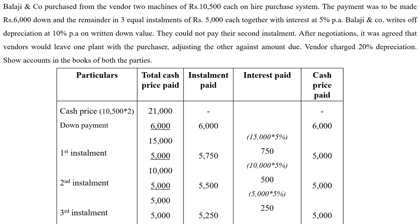The question: Balaji and Co. purchased from the vendor two machines of rupees 10,500 each on hire purchase system. Payment was to be made 6,000 down and the remainder in three equal installments of rupees 5,000 each, together with interest at 5% per annum. Balaji and Co. writes off depreciation at 10% per annum on written down value. They could not pay their second installment. After negotiation, it was agreed that the vendor would leave one plant with the purchaser, adjusting the other against the amount due. The vendor charged 20% depreciation.